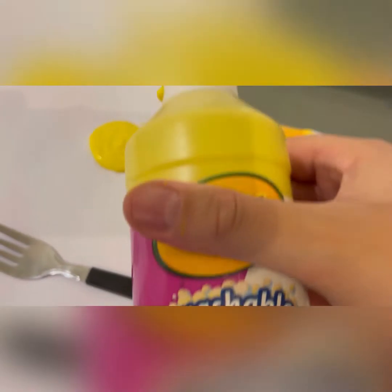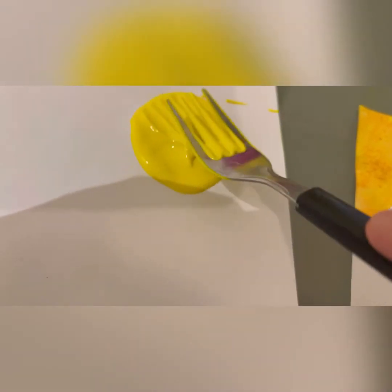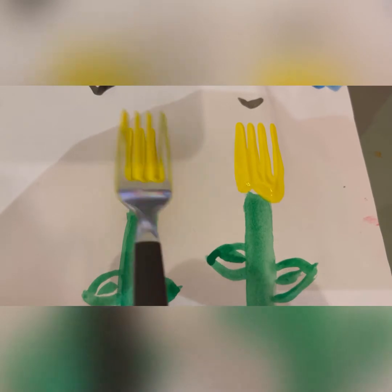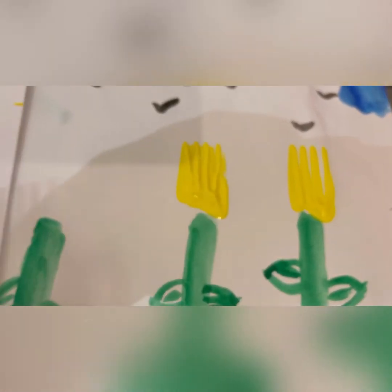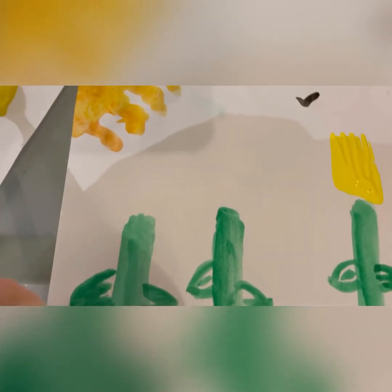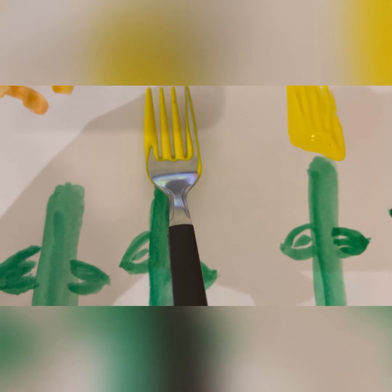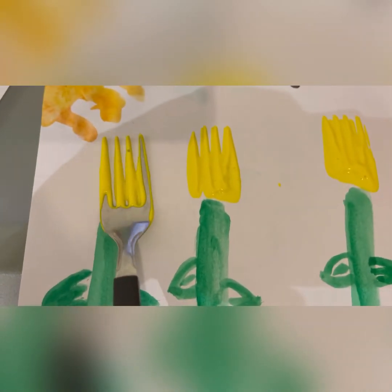And then what we're going to do is grab our fork and put it on the paint. I have this yellow paint but you can use those watercolors as well. I'm just going to grab it. We're going to load it really, really well, and then we're going to stamp it like that to create the tulip petals.